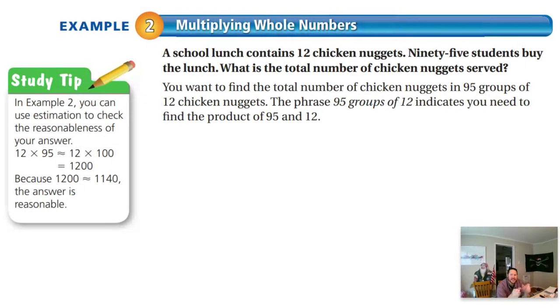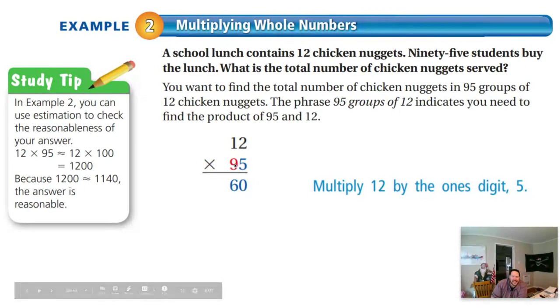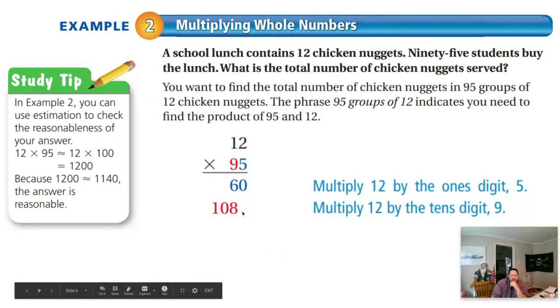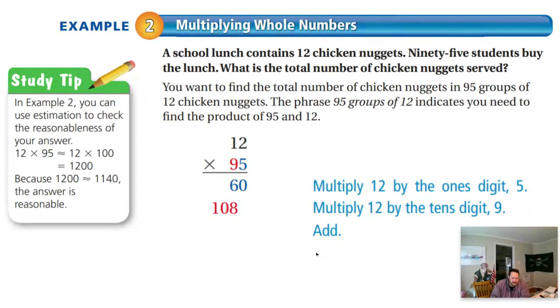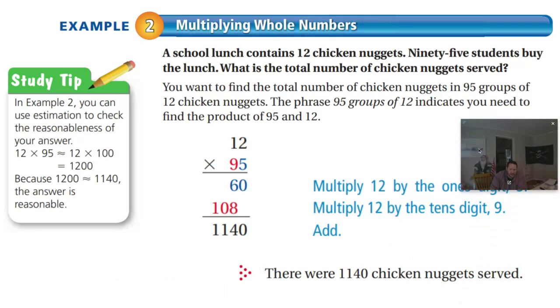We are doing 12 nuggets per lunch times 95 lunches. The way you do that is you line up the numbers and you are going to multiply this 5 times the 12 first. That gives you 60. And then, we're done with this 5. Now, when you're multiplying the 9, you're actually multiplying 90. So, you need to put a little space here or an X or a 0. You need a little placeholder down here when you're multiplying through the 9 by the 12. And 9 times 12 is 108. You have to have this space or move it over, put a little X or a 0 there because this actually represents 90, not 9. And then, you add them up and you get 1,140. So, there were 1,140 chicken nuggies served that day.